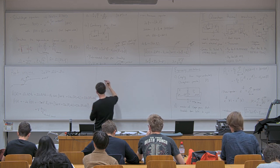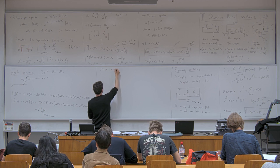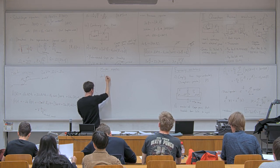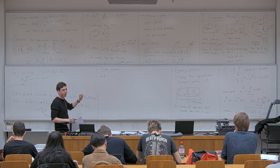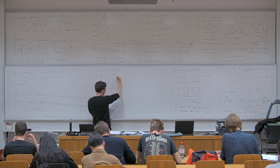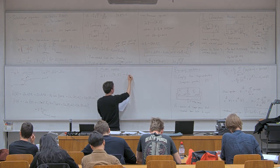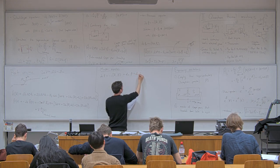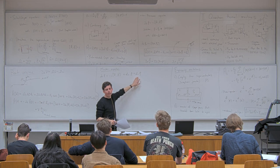Now we want to describe the thermal bath using a master equation. Our density matrix evolves under a von Neumann equation plus super operators L_C and L_H for each bath. These super operators have a coupling constant κ, and two terms: one corresponding to absorbing photons from the bath, and one corresponding to emitting photons to the bath.